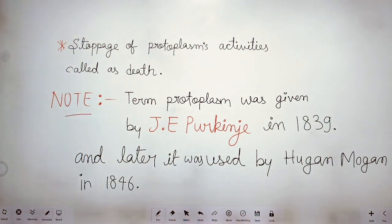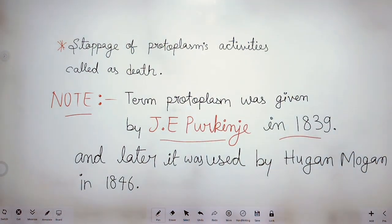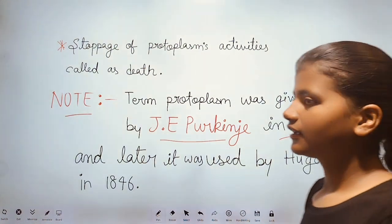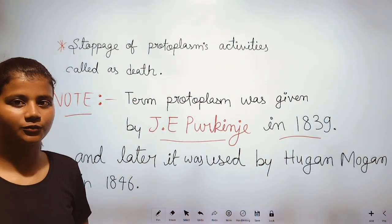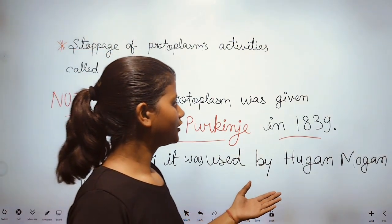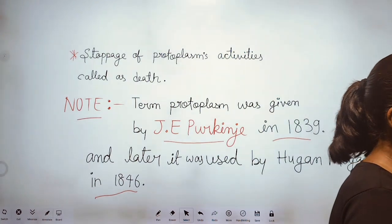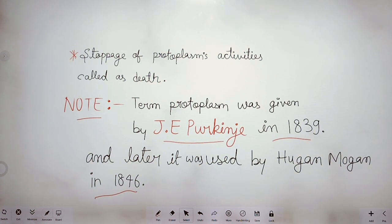A note point: the term protoplasm was given by J. Purkinje in the year 1839, and later it was used by Hugo von Mohl in the year 1846.